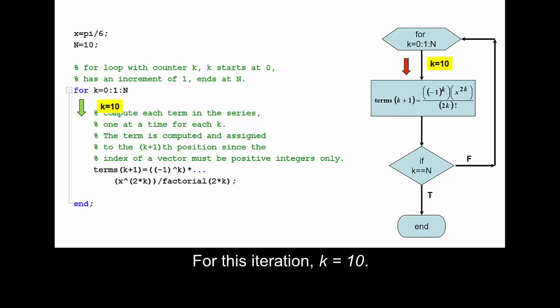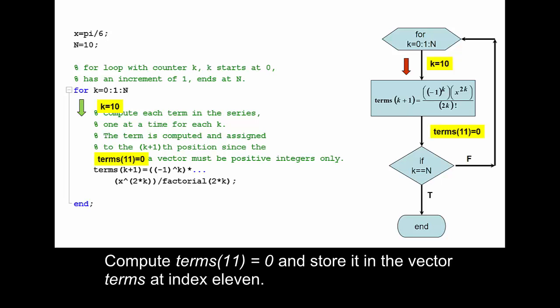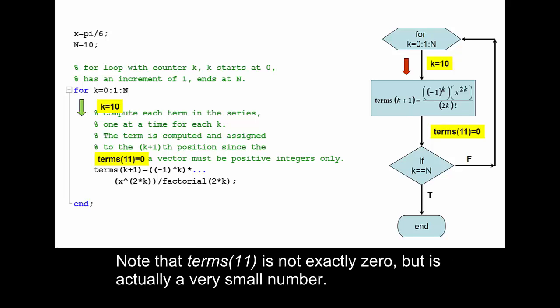For this iteration, k equals 10. Compute terms(11) = 0 and store it in the vector terms at index 11. Note that terms(11) is not exactly 0, but is actually a very small number.